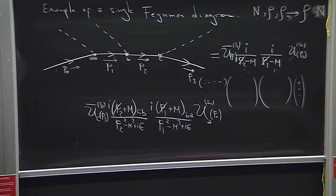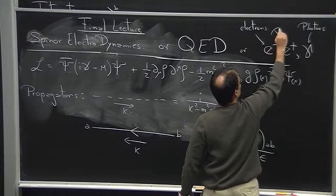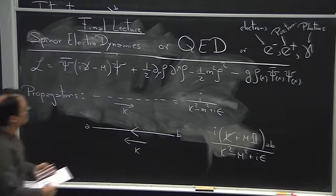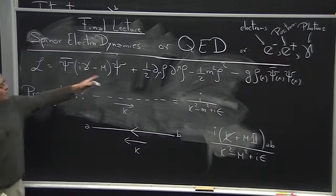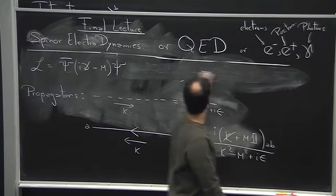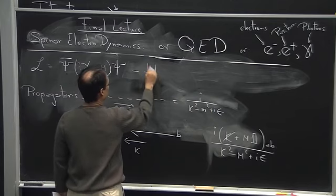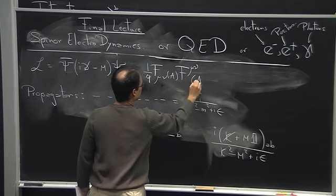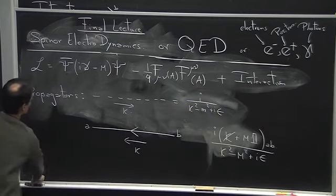At last we're ready to do spinor electrodynamics, or QED — the theory of electrons, anti-electrons (positrons), and photons. Instead of nucleons and anti-nucleons, we now talk about electrons and anti-electrons. The great thing is that we keep the same Lagrangian — we just erase the meson term and add the Maxwell Lagrangian plus some interaction term, which we have to find.